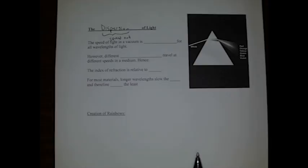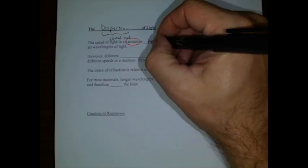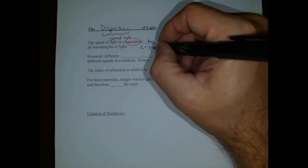Now, when you're in a vacuum, so this is particular for a vacuum, the speed of light in a vacuum is the same for all wavelengths of light. So that's the little c. C is 3 times 10 to the 8th meters per second. That's true for every wavelength.